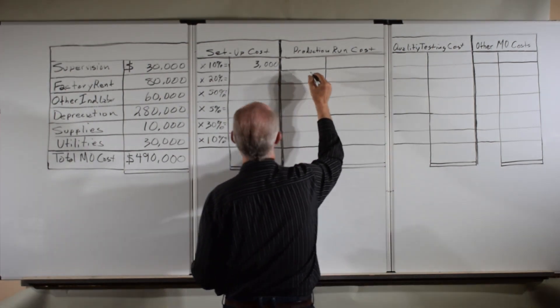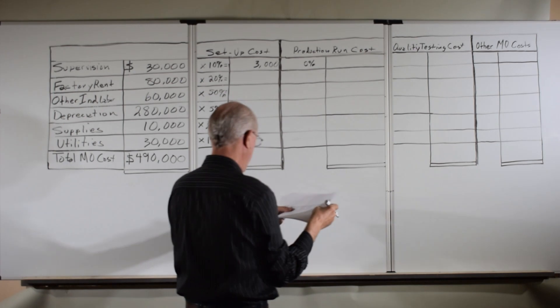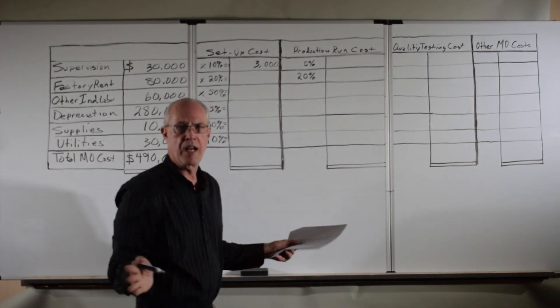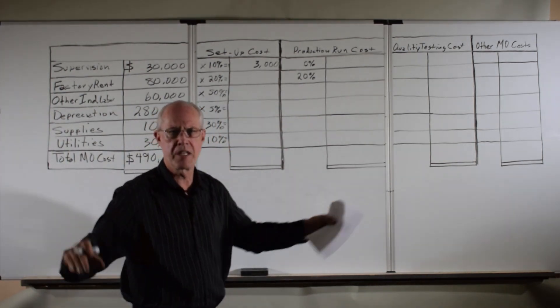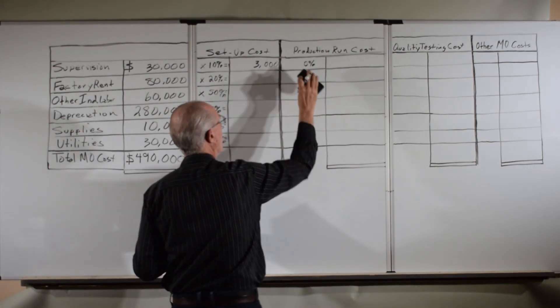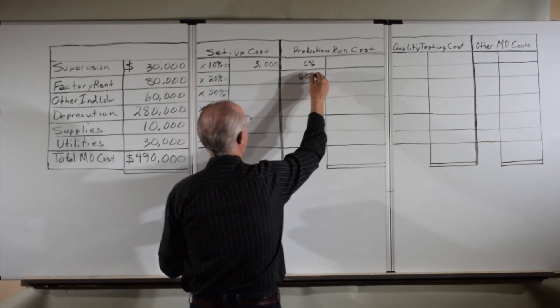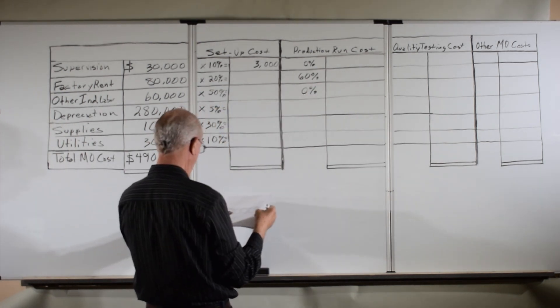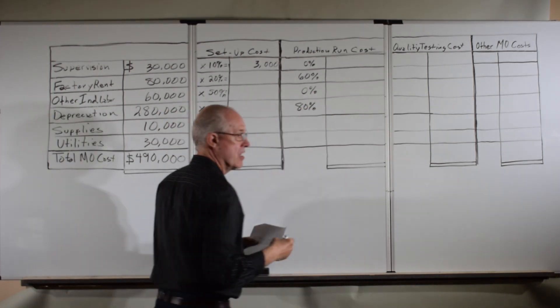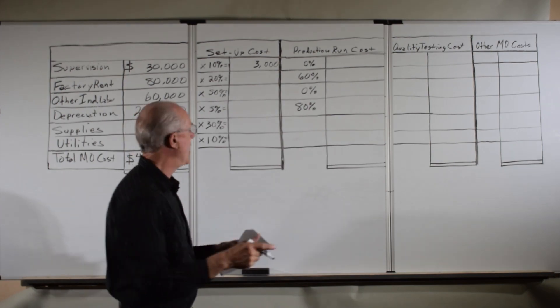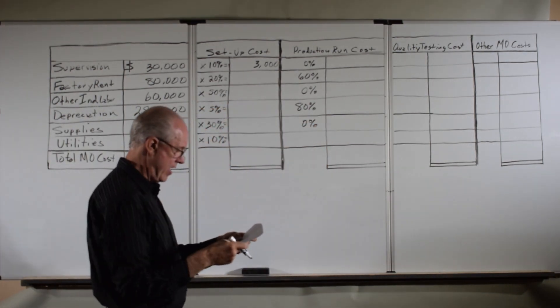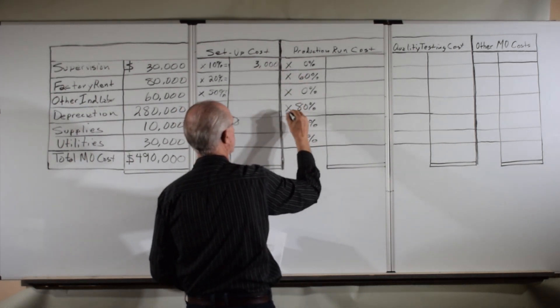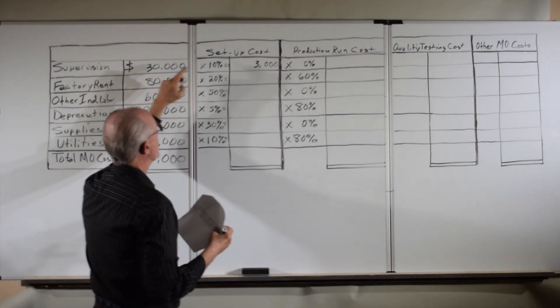For supervision, zero. We don't really have supervisors supervising the machine. Factory rent, 60%. It should be a huge proportion because that's where all the production equipment is. For other indirect labor, 0%. For depreciation, a whopping 80% of the depreciation of the factory is on the production equipment. Supplies, 0%. And utilities, they're using a whopping 80% of the utilities. We're going to multiply each of these by the cost over here.